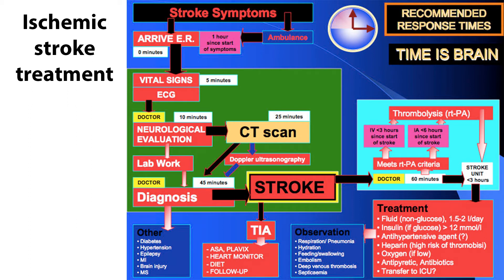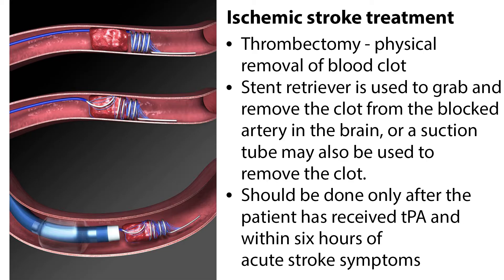Treatment for a stroke depends on the type of stroke. Ischemic stroke requires clot busting or clot removal. Commonly known as clot busters, thrombolytics or fibrinolytics can help reduce the damage to brain cells caused by the stroke. Dissolving the clot allows blood flow to the brain to be restored and can decrease the severity of symptoms. The gold standard clot busting medication is IV tissue plasminogen activator, or TPA. TPA works by dissolving the clot and improving blood flow to the part of the brain being deprived of blood flow. When given within the first three hours of symptom onset, TPA can reduce the long-term effects of stroke. After the three-hour window, TPA is not as effective and the risks may outweigh the benefits. Another treatment option for ischemic stroke is to physically remove the blood clot, known as a thrombectomy. By threading a catheter through an artery in the groin, a stent retriever is then used to grab and remove the clot from the blocked artery in the brain, or a suction tube may also be used to remove the clot.